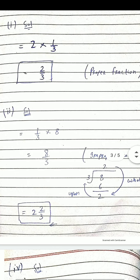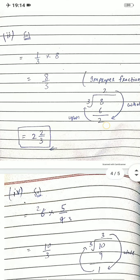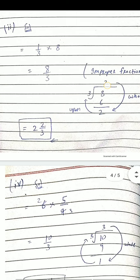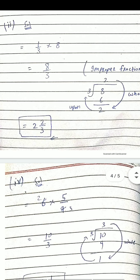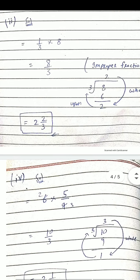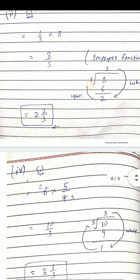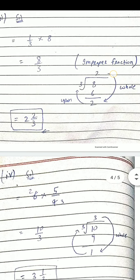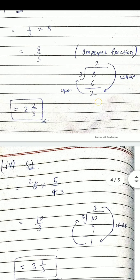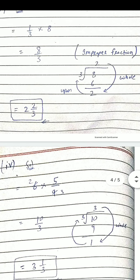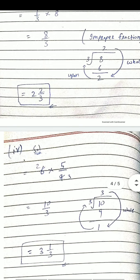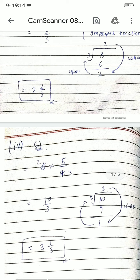Convert کریں گے اس طرح: 8 divide ہو رہا ہے 3 سے۔ 3 کا 2 بار — یعنی 3×2=6۔ 8 میں سے 6 جائے گا — remainder 2 بچتا ہے۔ اوپر والی چیز جو divide ہوتی ہے اسے whole number میں لکھتے ہیں۔ تو arrow کے مطابق: 2 whole number، 2 upon 3۔ یعنی 8/3 کا answer ہے 2 اور 2/3۔